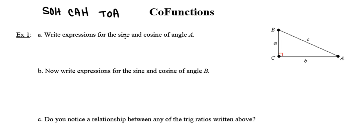So in this very first example, they want us to write expressions for sine and cosine of angle A. So sine of angle A is going to be the ratio between the leg opposite angle A, or leg A, over the hypotenuse, which in this case is C. Cosine of angle A is going to be the relationship between the adjacent leg, which is B, and the hypotenuse.